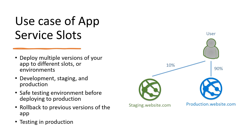A key use case of app service slots is we can deploy multiple versions of the app to different slots and we can do testing in production by redirecting some user traffic to staging. After testing, once we swap to production, if something goes wrong like some feature is not working for some users, then we can roll back to the previous version of the app. This is one of the major features we use for testing in production and rollback.